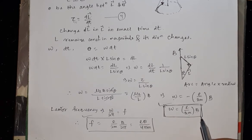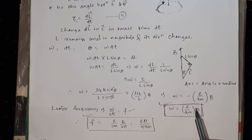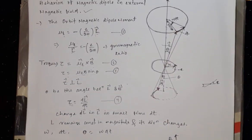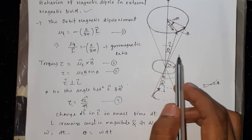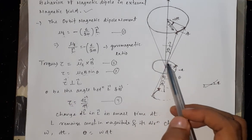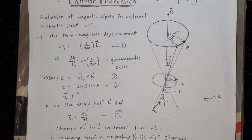The Larmor frequency is given by f equals omega by 2 pi. Substituting the value gives f equals e by 2m times B divided by 2 pi, which equals eB by 4 pi m. This is called the Larmor frequency. To summarize: we observed the behavior of a magnetic dipole in an external magnetic field. An electron revolving around a nucleus creates a dipole moment which induces a magnetic field, and around this field the electronic orbit precesses. Hope this is useful — please share and subscribe to our channel. Thank you.